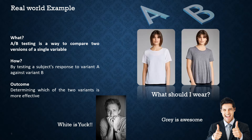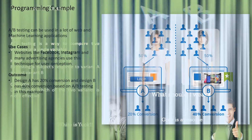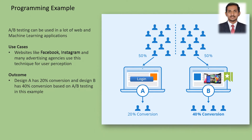We apply A/B testing all the time in real life. A/B testing is a way to compare two versions of a single variable. Large social media sites like LinkedIn, Facebook, and Instagram use A/B testing to make the user experience more successful and to streamline their services.